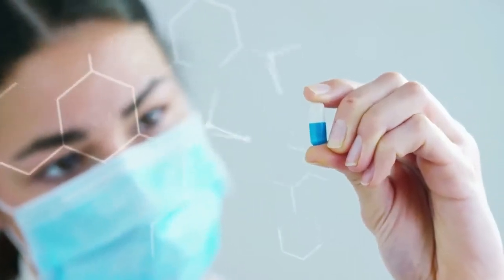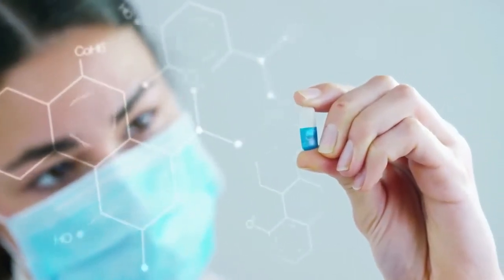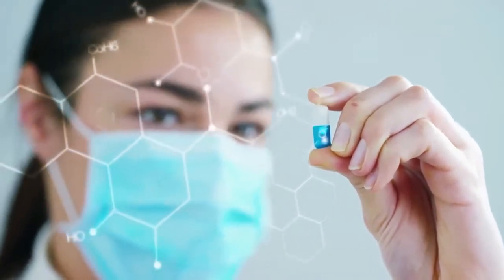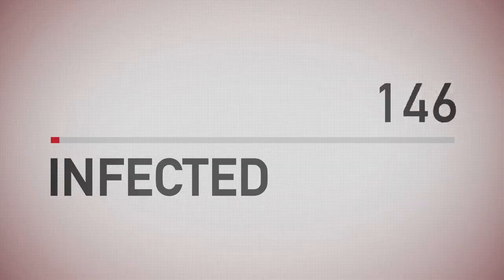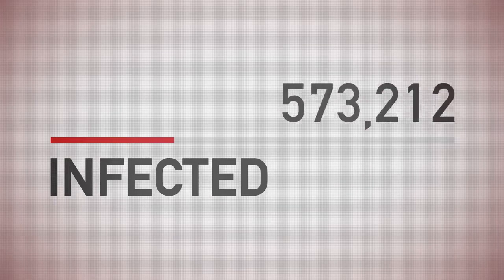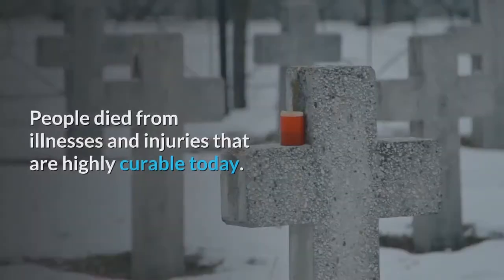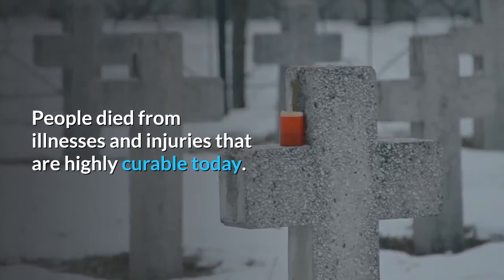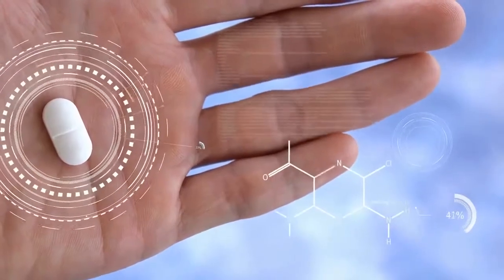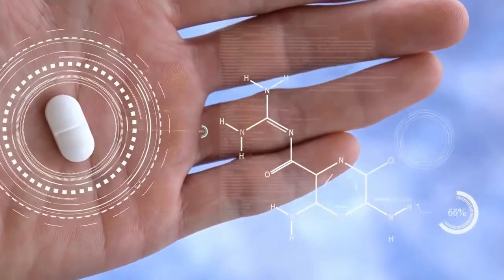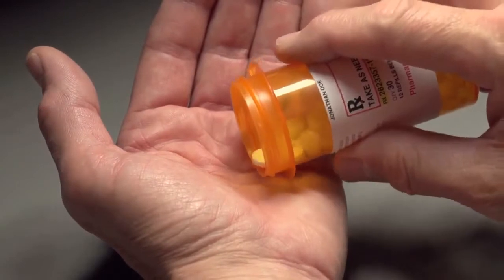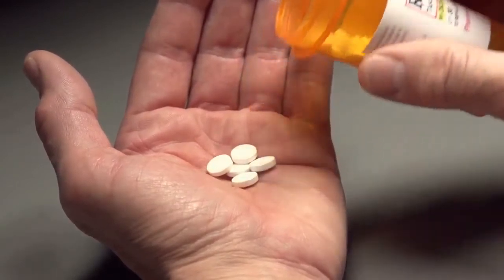The discovery of the first true antibiotic, penicillin, in 1928 was one of the most life-changing events of the 20th century. Before its discovery, when bacterial infections developed, there wasn't much doctors could do. People died from illnesses and injuries that are highly curable today. Now, there are more than 100 antibiotics to fight the war against bacterial infections. Here is a look at common antibiotic names and the types of antibiotics your doctor may prescribe.